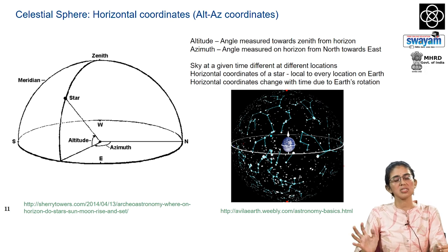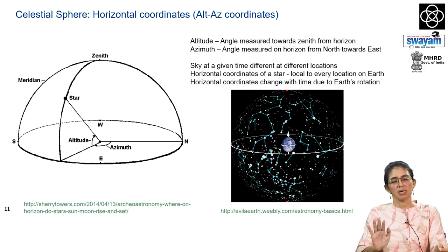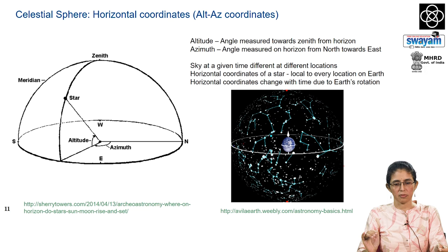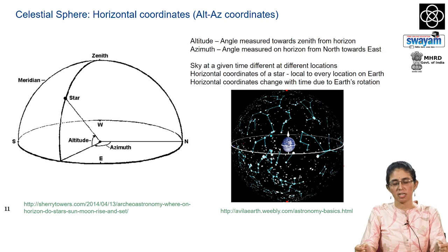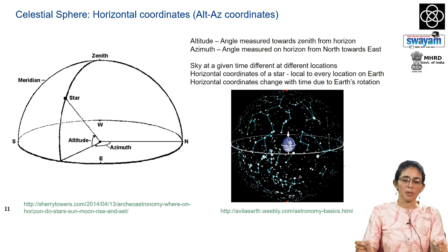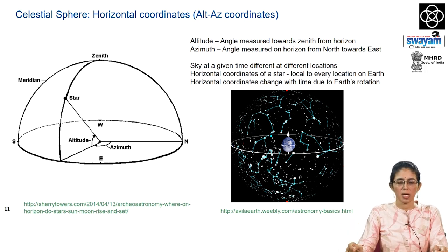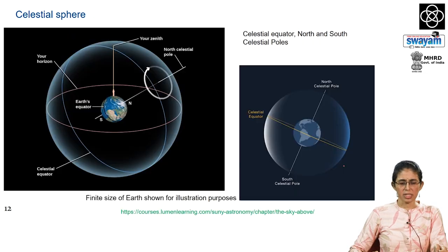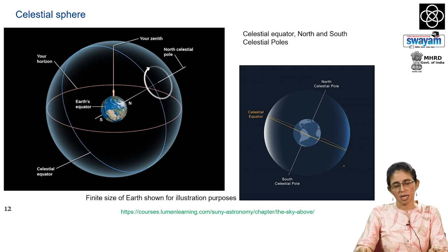The horizontal coordinate system is very local to the observer. An observer at different locations on Earth can only view a certain hemisphere of the celestial sphere. When measuring altitude and azimuth coordinates, these are specific to the observer's location. If you want to communicate the position of a star with a person in another location, altitude and azimuth can be used but are not the best coordinates, as one would need to convert them. A more global coordinate system is the equatorial coordinate system.